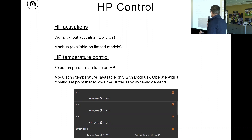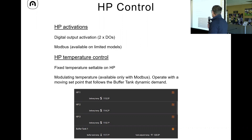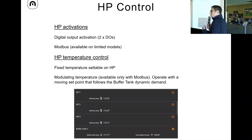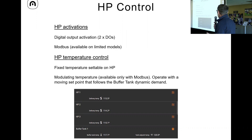Otherwise it would be a digital output activation — on/off, heating and cooling, fixed temperature. Controlling the heat pump via Modbus is an enormous advantage because we can modulate not only the temperature on the buffer tank, but also the temperature of the heat pump itself. That allows us to achieve quite a bit of saving and increase the COP of the heat pump in both heating and cooling.